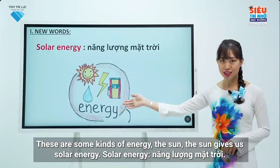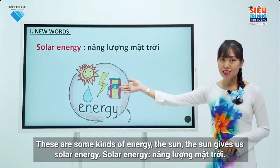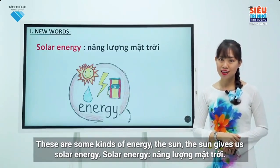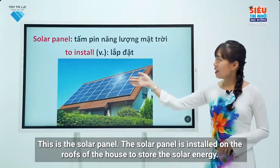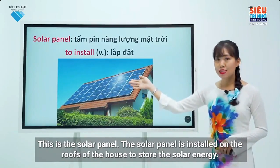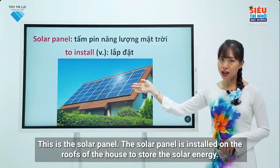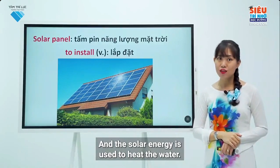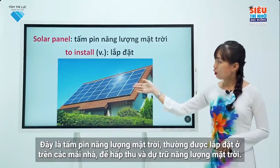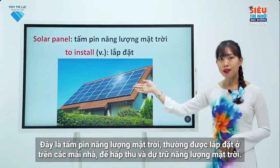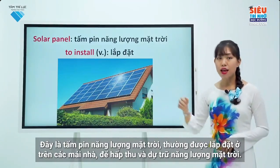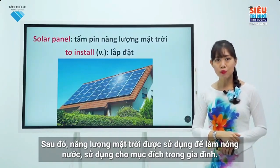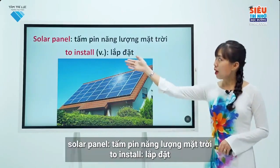These are some kinds of energy. The sun gives us solar energy. This is the solar panel. The solar panel is installed on the roofs of the house to store solar energy, and the solar energy is used to heat the water. We also use it to make the water warm and to consume for housework purposes. Solar panel — to install.